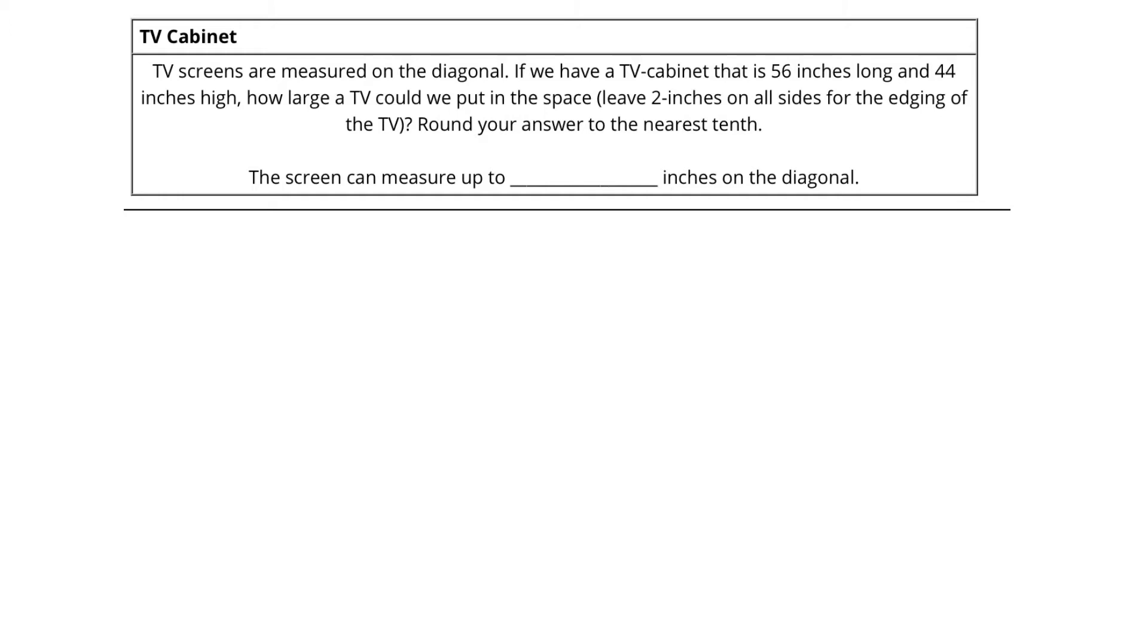Now first of all, I want to comment on something and that is the very first sentence which says that TV screens are measured on the diagonal. What that means is that if I have a TV that's rectangular in shape and I said it was a 70 inch TV, that means the distance from one diagonal of that TV screen to the other is 70 inches. Now having that background information, we can go on to solve the problem.